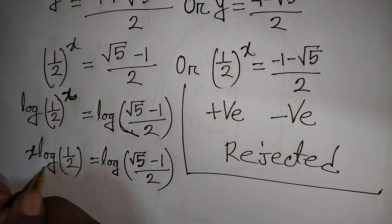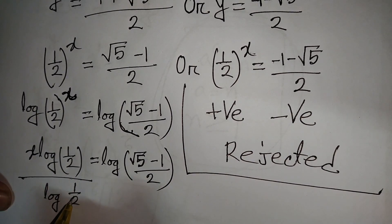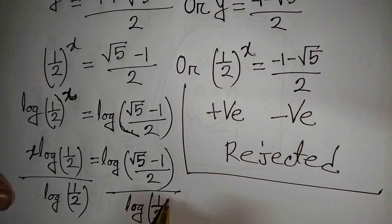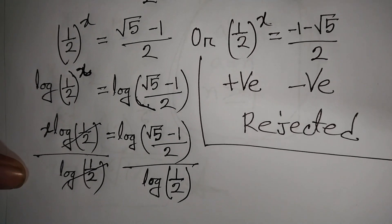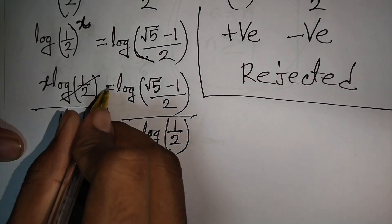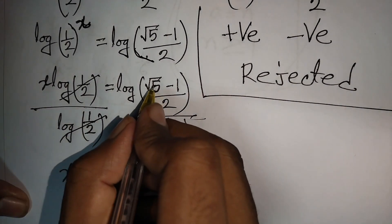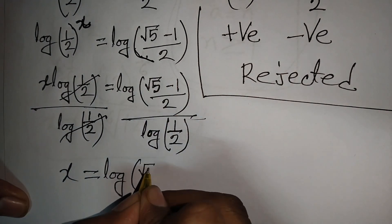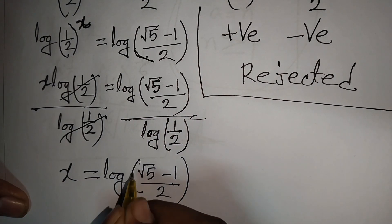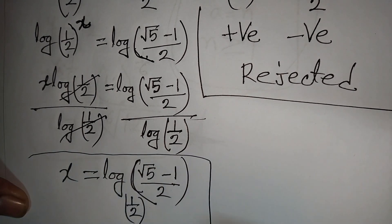Dividing both sides by log(1/2), the log(1/2) cancels, and we get x equals log of (root 5 minus 1) over 2, to the base 1/2. This is our final answer for x.